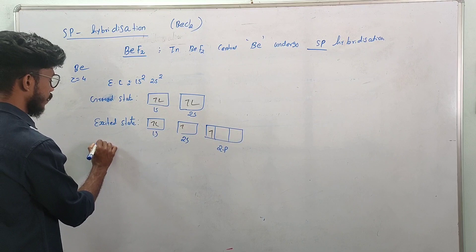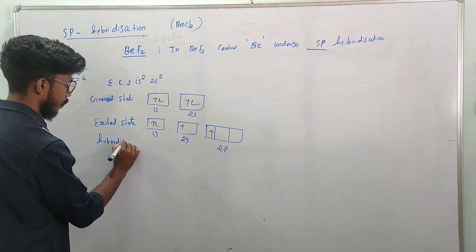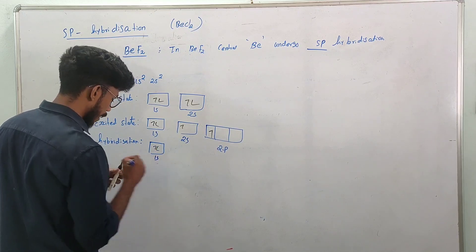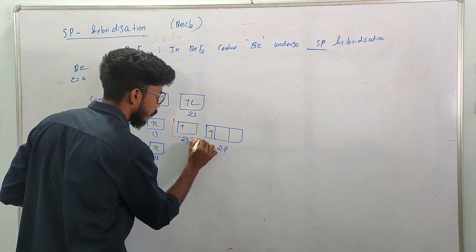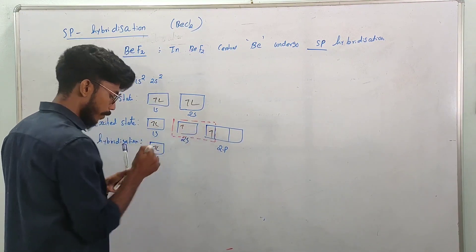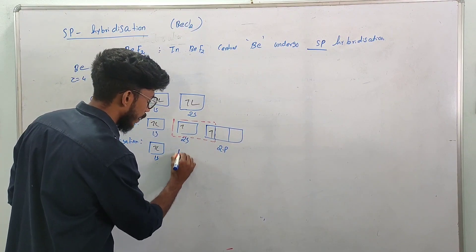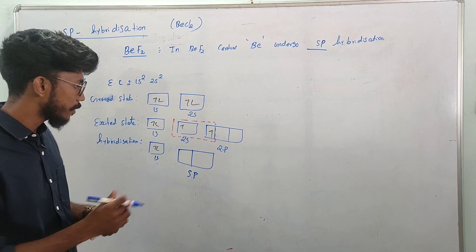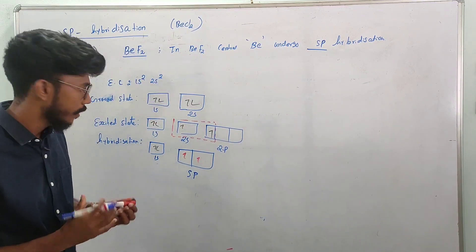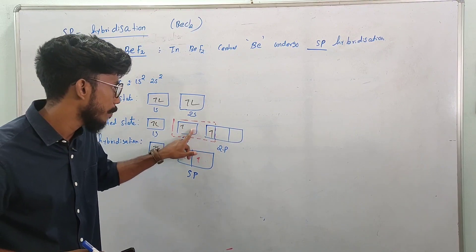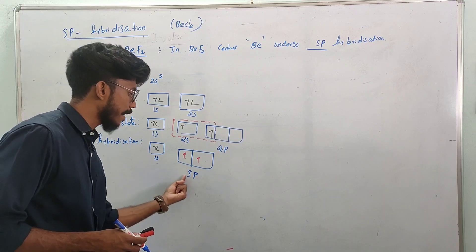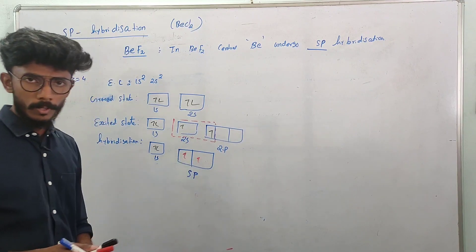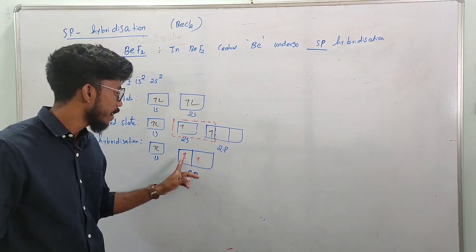Next is hybridization. We combine the 1s orbital and the 1p orbital. We add 1s and 1p orbital together. This forms the hybrid orbital. In this way, we form a sp hybrid orbital by combining the s orbital and p orbital.